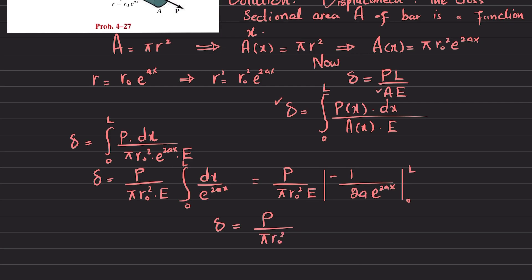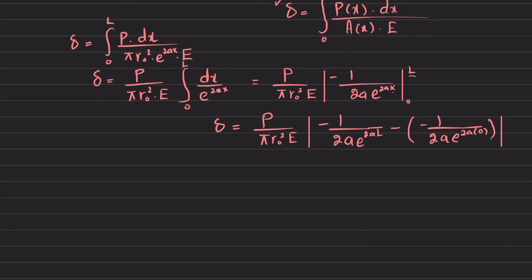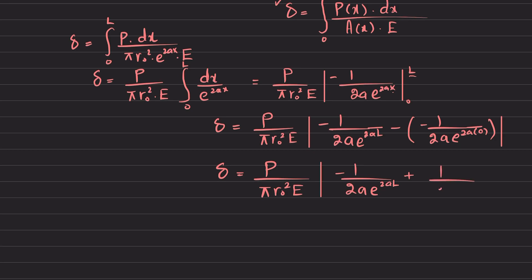Evaluating the integral of e^(-2ax) gives [-1/(2a)·e^(-2ax)], evaluated from 0 to L. Applying the limits: upper limit L gives -1/(2a)·e^(2aL), and lower limit 0 gives -1/(2a)·e^0. This becomes: P/(π·r₀²·E) · [-1/(2a)·e^(2aL) + 1/(2a)], and since e^0 = 1, we factor out 1/(2a).